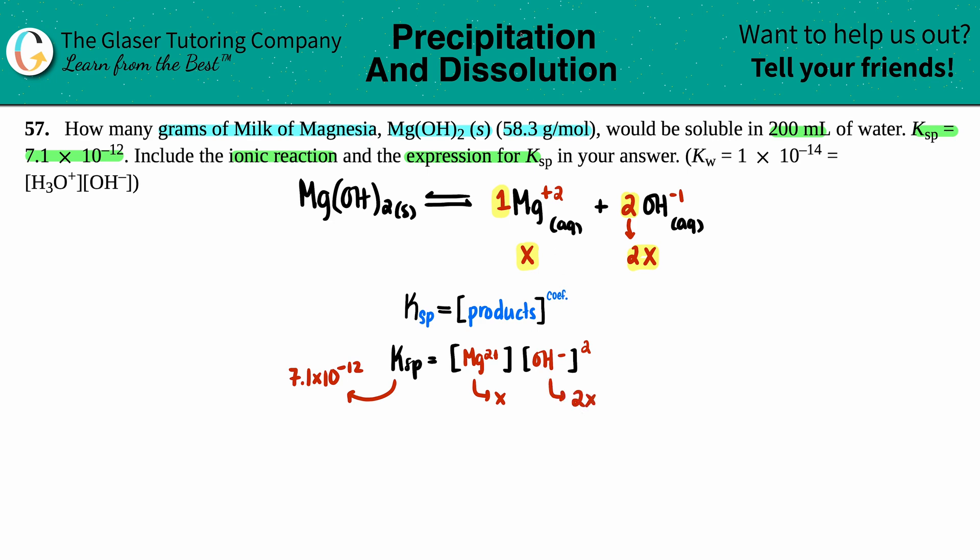Now let's plug it in and solve for x. 7.1 times 10 to the negative 12 equals x times (2x)². Let's work on that (2x)². Squaring means you have 2x times 2x. Work on the numbers first: 2 times 2 is 4, and then you have two x's, so this is x². This is 4x². Pick up another x value, you have three now, so 7.1 times 10 to the negative 12 equals 4x³.